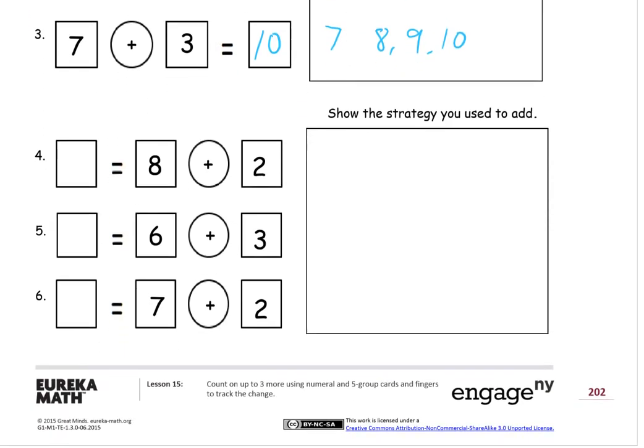Now these are backwards number sentences. We're starting with a total. So we're going to add eight plus two. We start with eight and then we count it on. Nine, ten. That's two more numbers. So our total is ten.